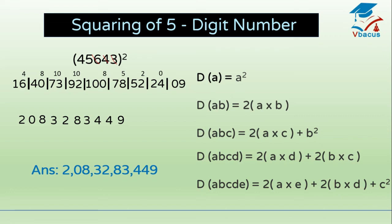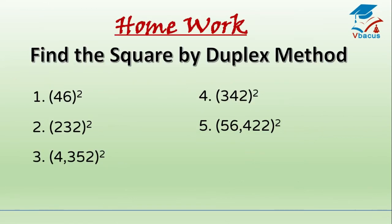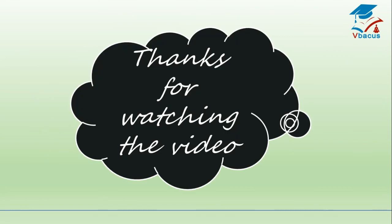You can check these answers in the calculator — this is a very amazing trick and shortcut method. There is a homework for you: find the square by duplex method — square of 46, find the square of 232, find the square of 4352, square of 342, square of 56422 — and write the answer in the comment box. Thanks for watching the video. If you liked the video, please do not forget to subscribe, share, and comment in the comment section.